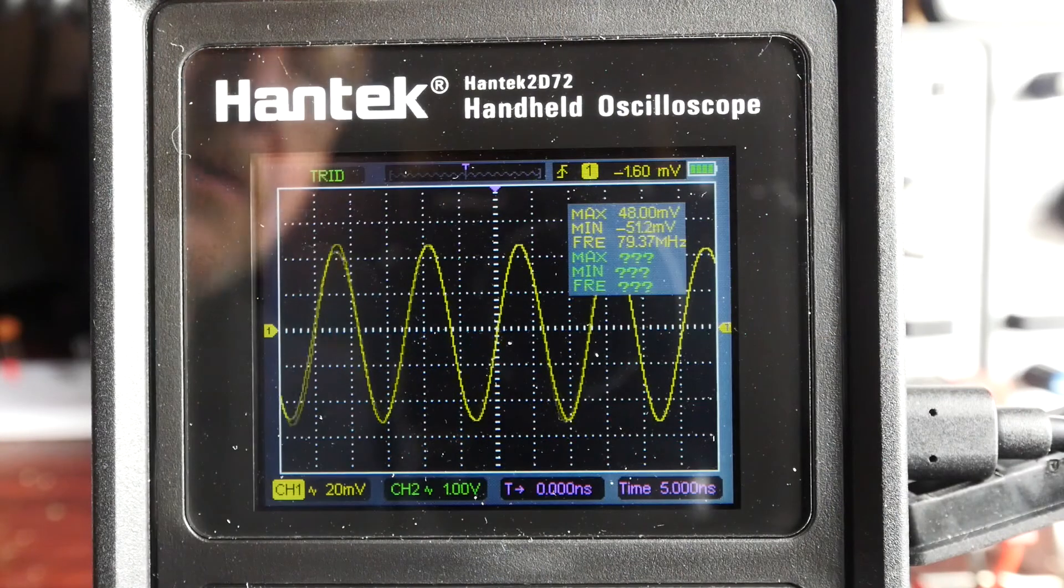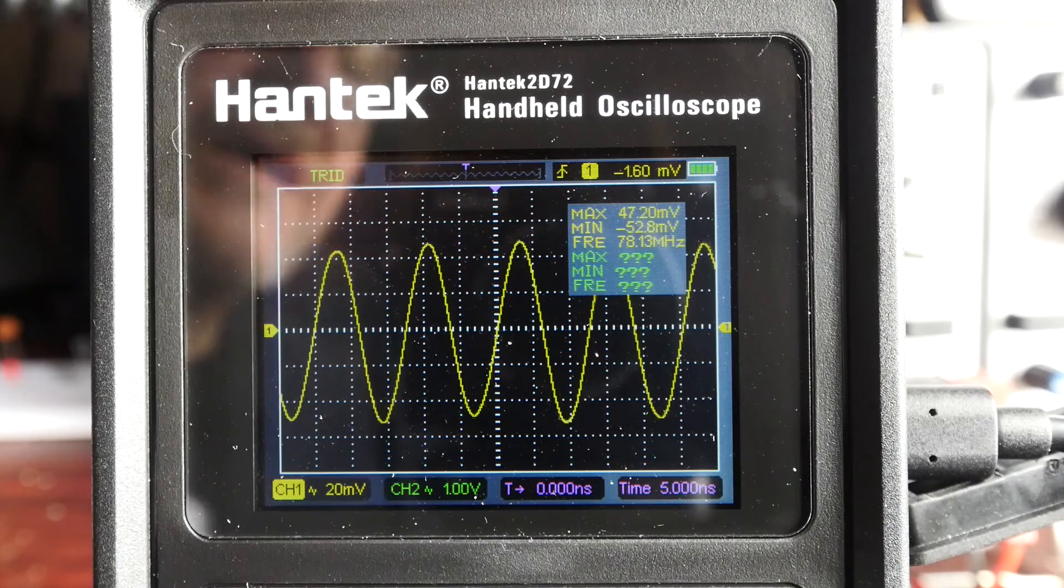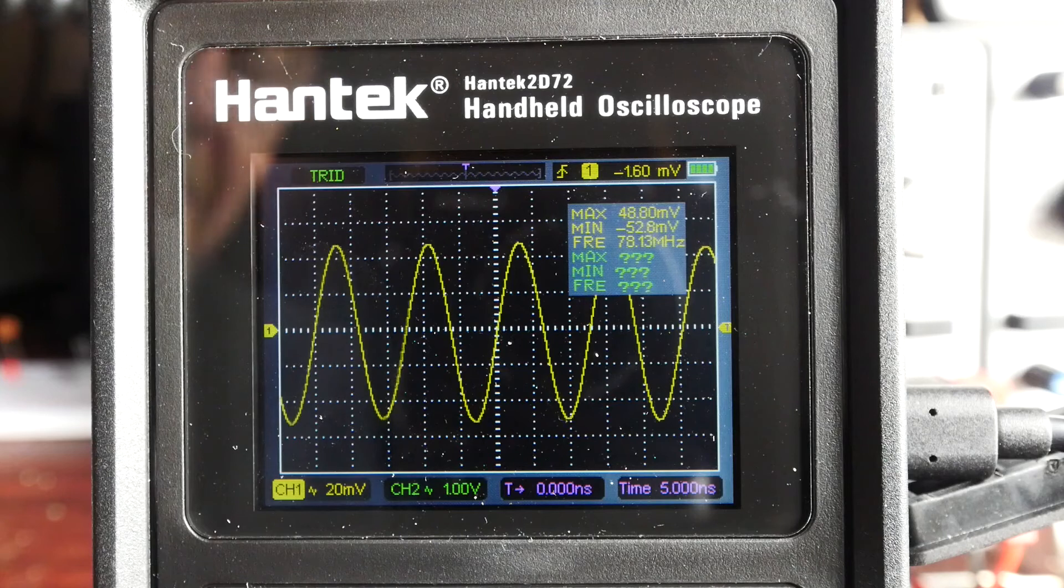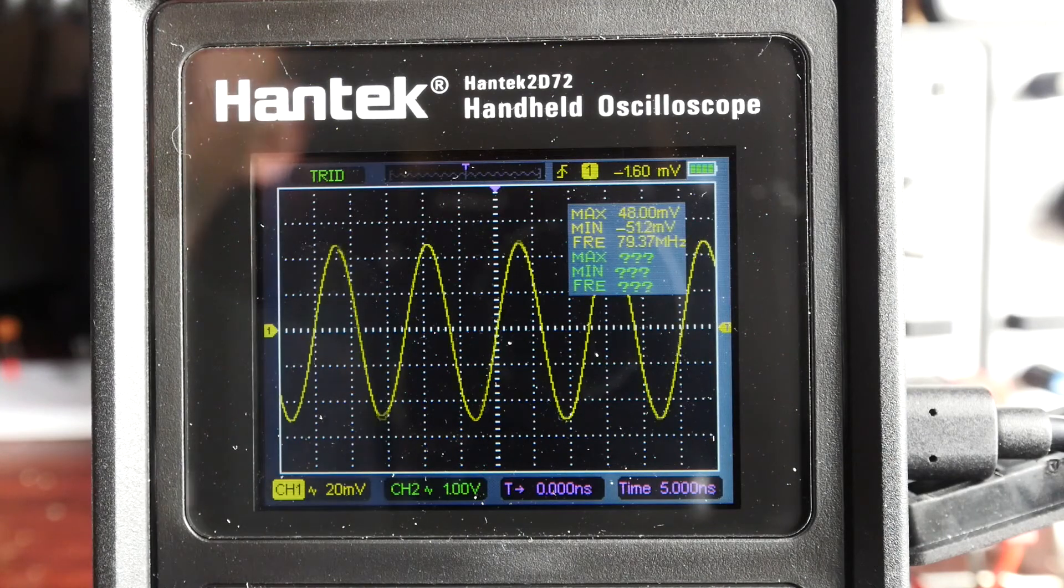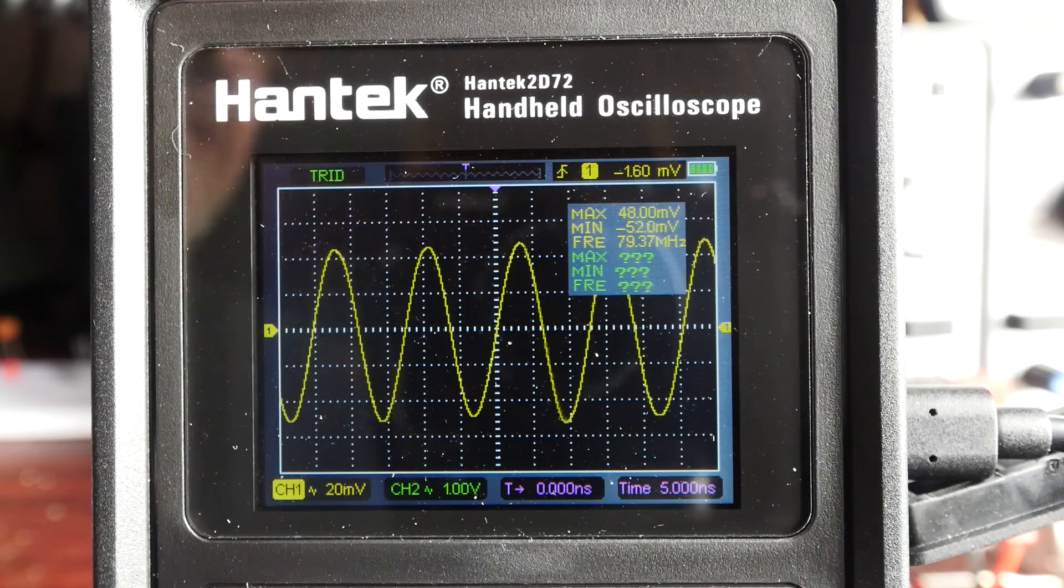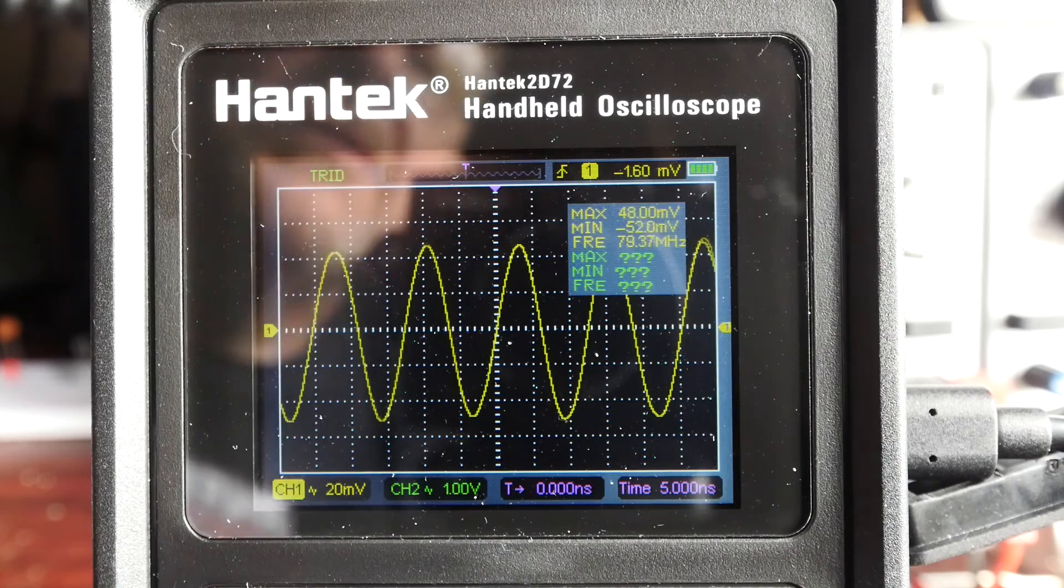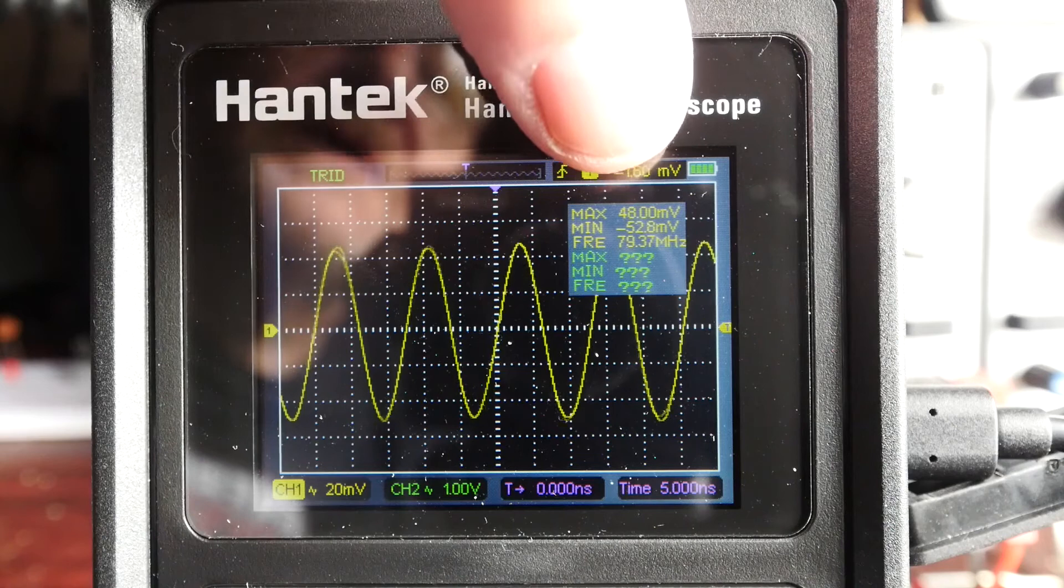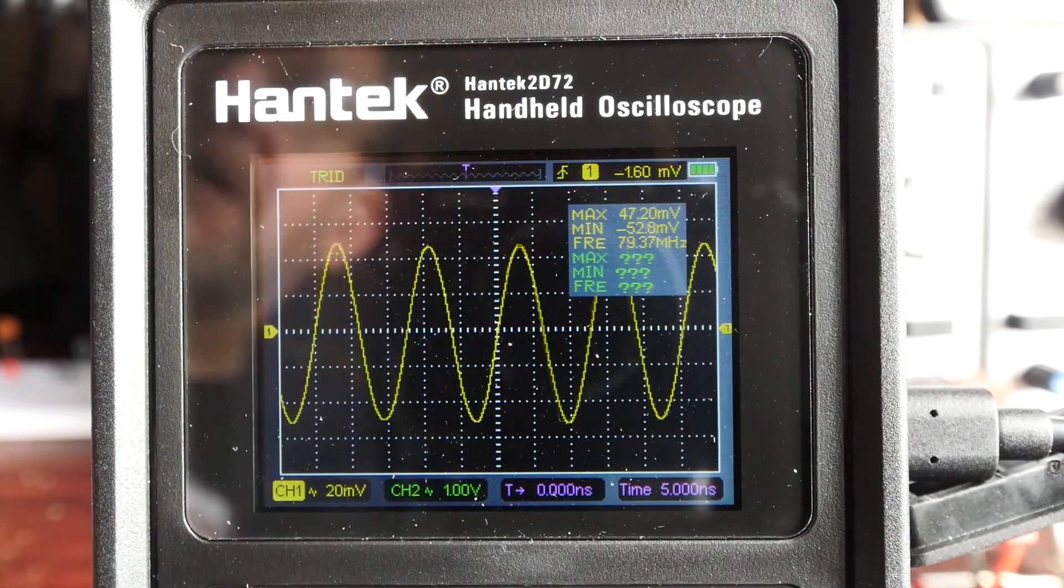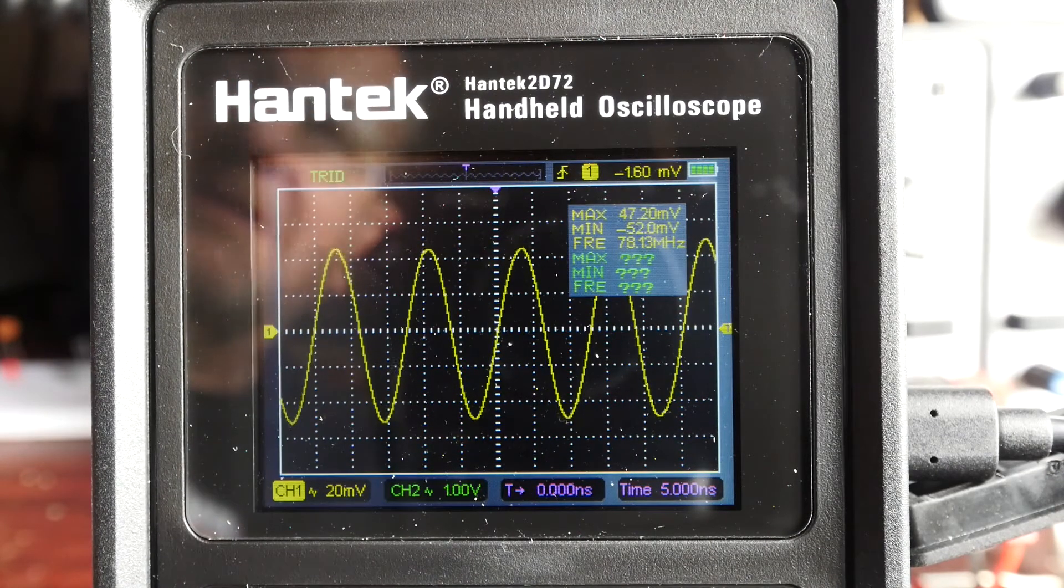Okay, so here we are looking at the oscilloscope function of the Hantek 2D72. I thought I'd start off by showing you what it's like at the top end of its range. This is roughly an 80 MHz signal coming in from my analog signal generator. As you can see, the waveform is wobbling about a bit, but the frequency measurement is saying somewhere between 79 and 80, and that agrees with my bench scope.